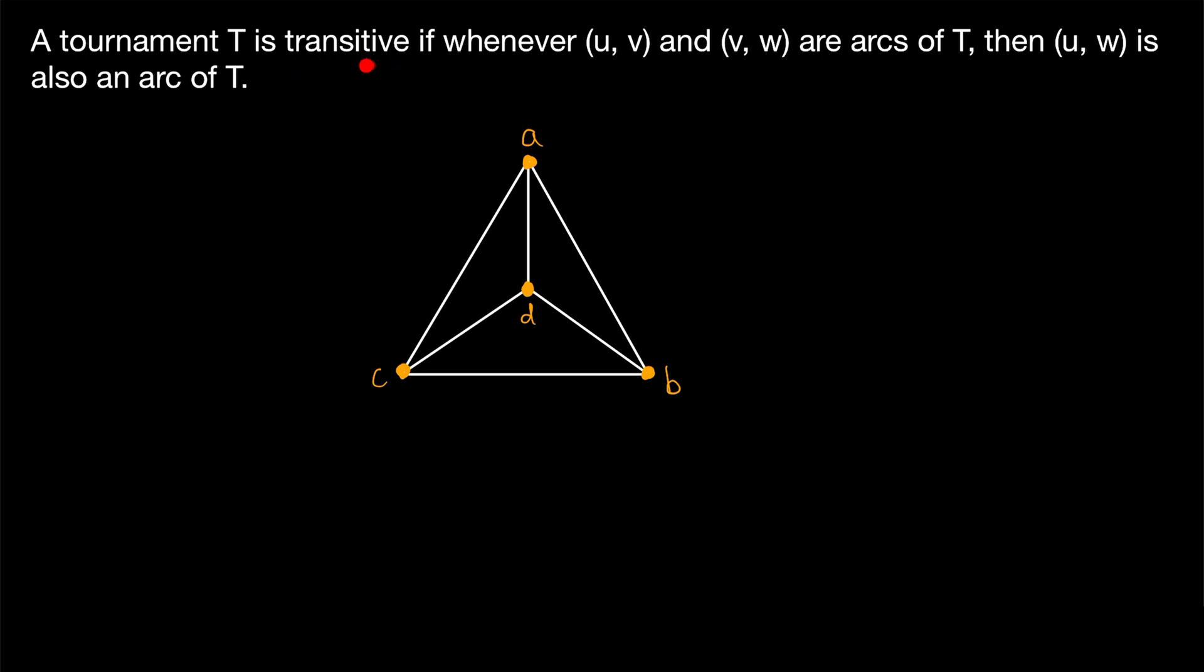To get a better feel for what this definition means, let's orient this complete graph by assigning directions to each edge in such a way that we end up with a transitive tournament. Assigning a direction to each edge in any way gives us a tournament, but let's try to do it transitively. We may begin with this edge between b and c, and perhaps we orient it towards c. Then maybe we orient this edge from c to d.